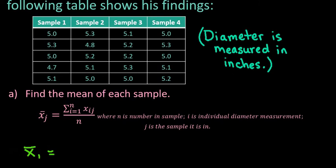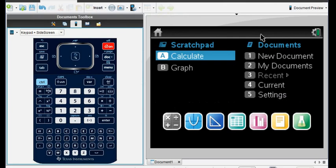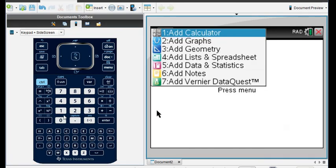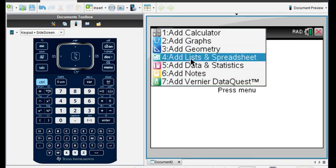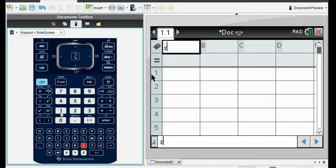The purpose of this is to show you how to use the TI-Nspire to help you. I'm going to grab my calculator and go to a lists and spreadsheet screen, putting the data in four different columns. I have my data points listed out on paper. I'm going to start a new document and add a lists and spreadsheet. I'll call each column whatever you want — I'm just going to call it S1 for sample one.